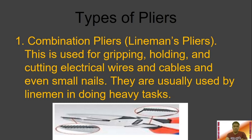The first type is combination pliers, also known as lineman's pliers or diagonal pliers. This is used for gripping, holding, and cutting electrical wires and cables and even some small nails. They are usually used by linemen in doing heavy tasks.